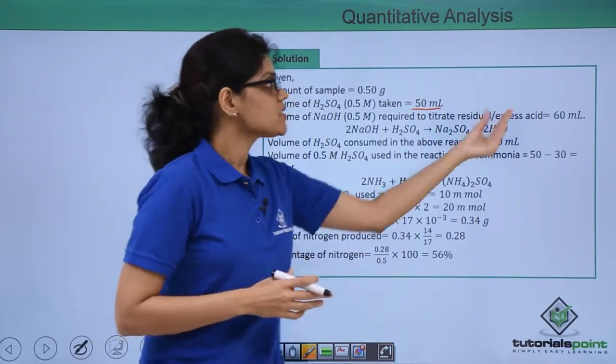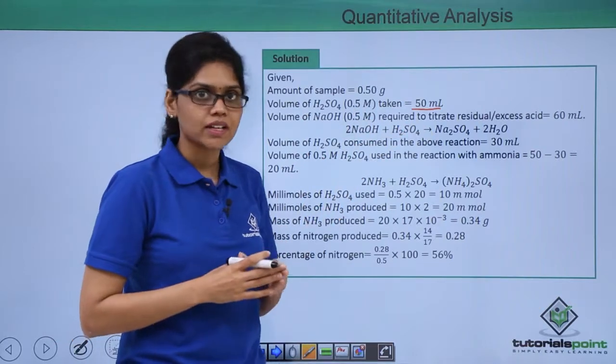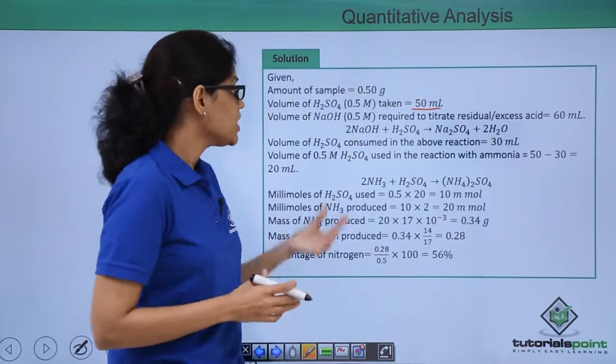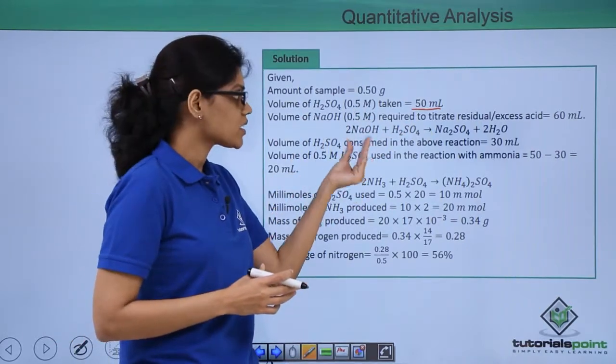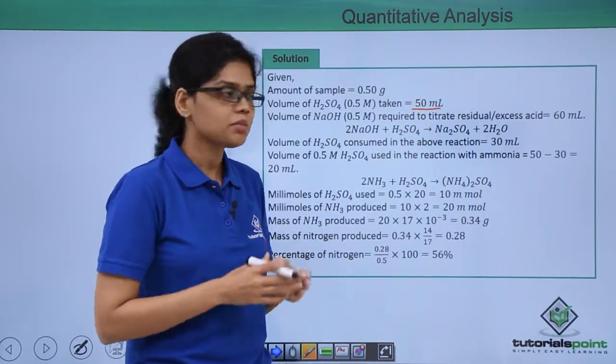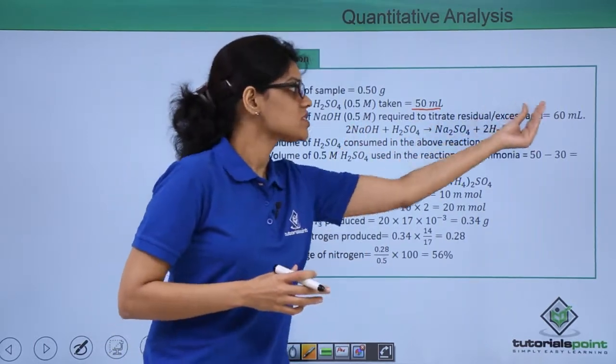We know that 60 ml of sodium hydroxide is required for this particular titration reaction. Then the volume of sulfuric acid consumed in the reaction would be simply V by 2 which is 60 by 2, that is 30 ml.